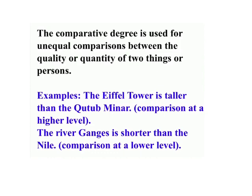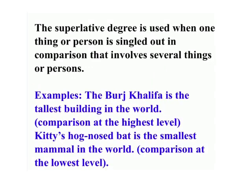The superlative degree is used when one thing or person is singled out in a comparison involving several things or persons. Examples: 'The Burj Khalifa is the tallest building in the world' — comparison at the highest level. 'The bumblebee bat is the smallest mammal in the world' — comparison at the lowest level.